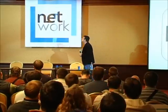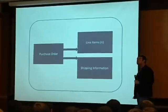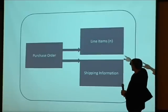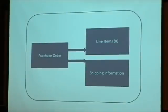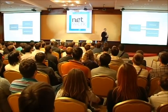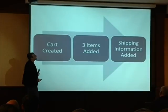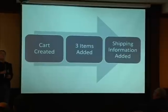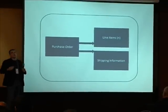A typical way of storing state is as an object with children — maybe a purchase order with N line items and shipping information. But there's another way: as a series of behaviors that happened previously. The cart was created, three items were added, and shipping information was added. At any given point in time, I can create the current state from those events. I can always redo what's happened in the past and get back to whatever I currently view this thing as meaning.